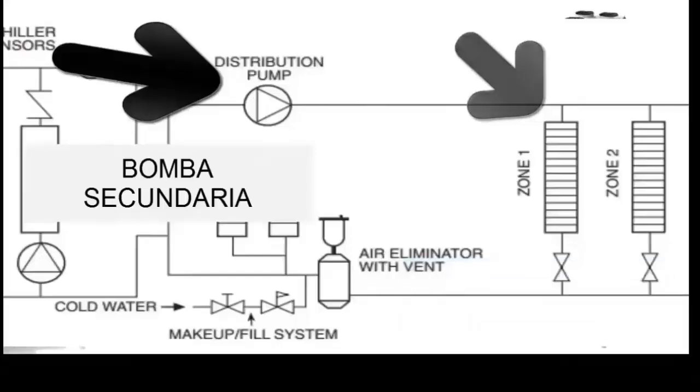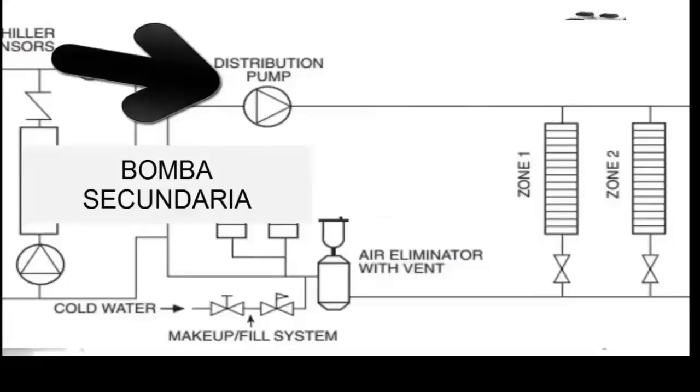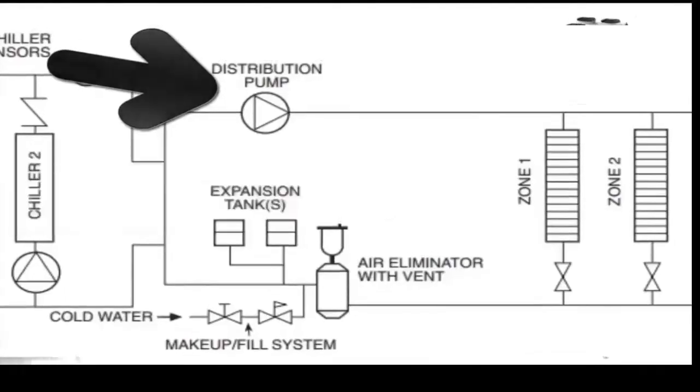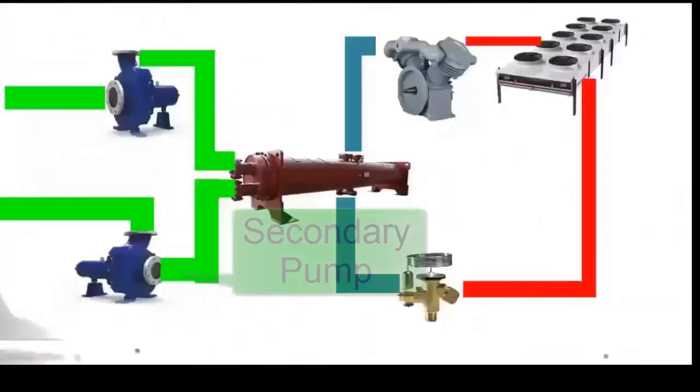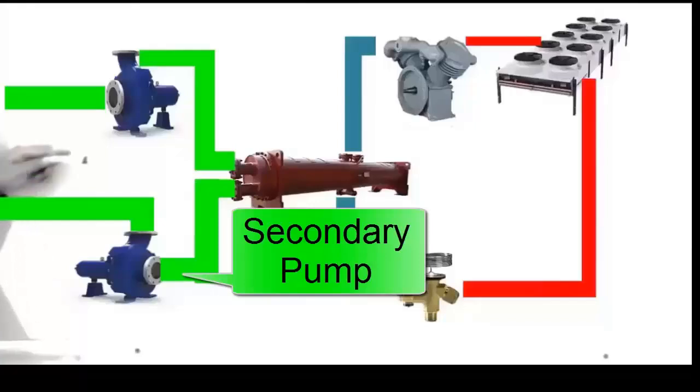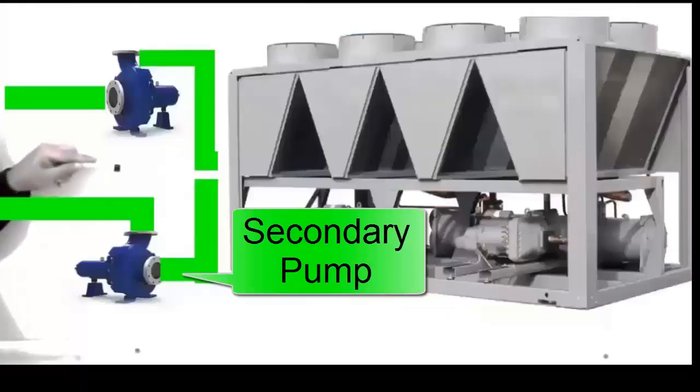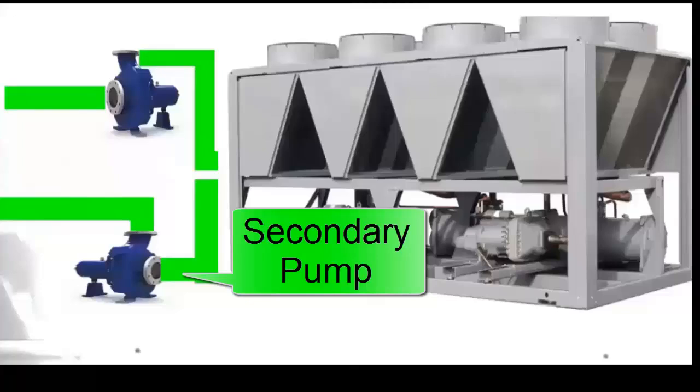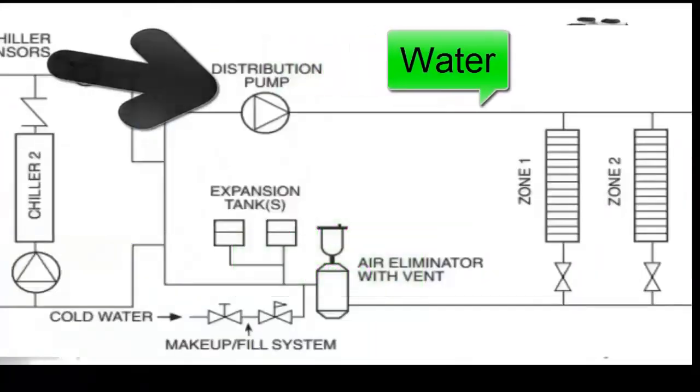This application point can vary considerably, but generally refers to HVAC systems or industrial processes that require controlled temperatures to function correctly. The secondary pump is responsible for ensuring that the cold water is distributed effectively and efficiently, providing the necessary flow and pressure to meet the system's demands.